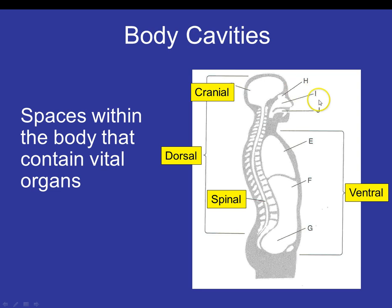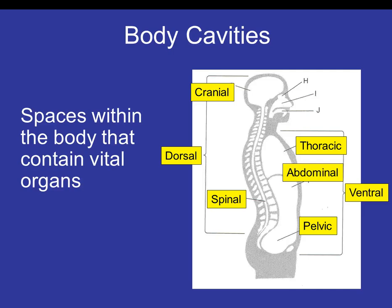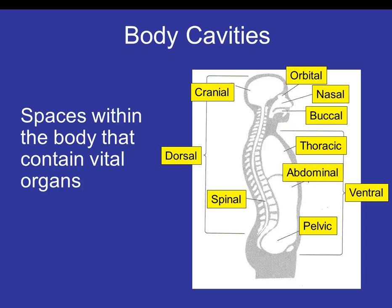Next we have the ventral cavity, which is everything on the front. It includes the thoracic cavity (chest), the abdominal cavity (stomach and intestines), and the pelvic cavity (pelvis and reproductive organs). Moving back up, we also have the orbital cavity containing the eyes, the nasal cavity pertaining to the nose, and the buccal cavity — 'buc' refers to the cheek, so this includes everything in the mouth: the cheeks, teeth, and tongue.